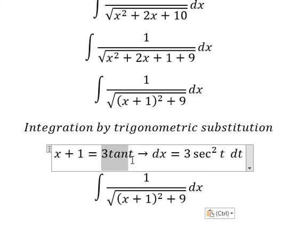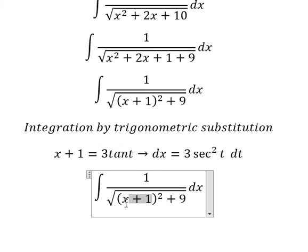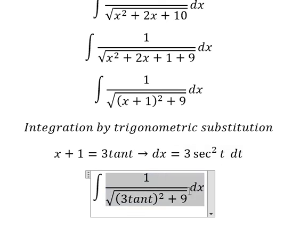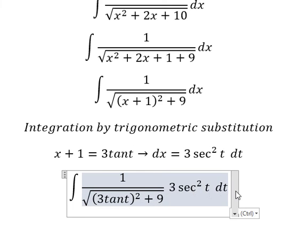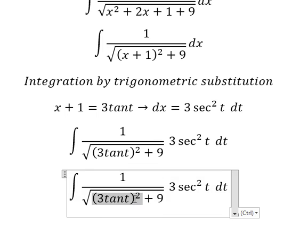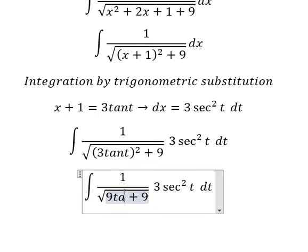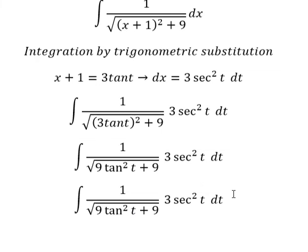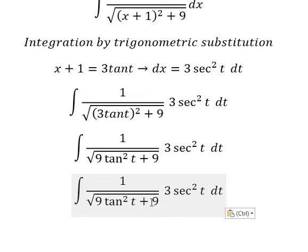So I will substitute this for dx. This gives us 9 tan²(t), and 9 and 9 we can factor out.